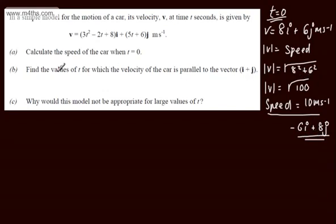We're now asked to find in part B the values of t for which the velocity of the car is parallel to the vector i plus j. Let's first do some basic revision.